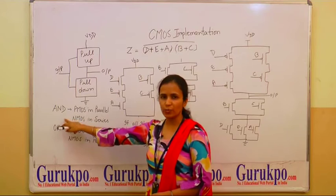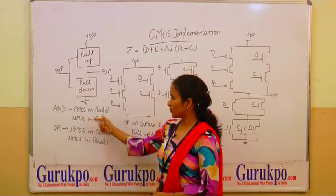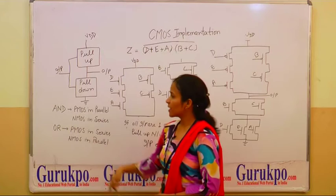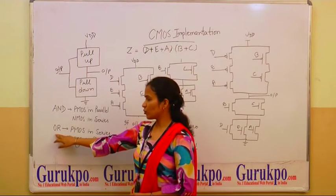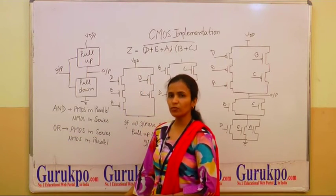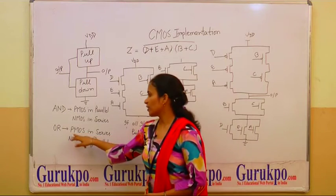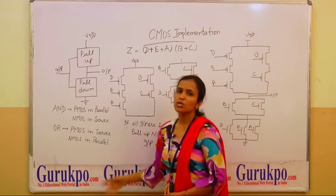when we are going to perform AND operation, then we have to connect PMOS in parallel form and NMOS in series form. Similarly, if we want to perform OR operation between two variables, more than two variables, then we have to connect PMOS in series and NMOS in parallel form.